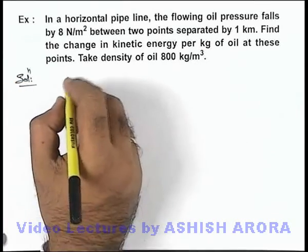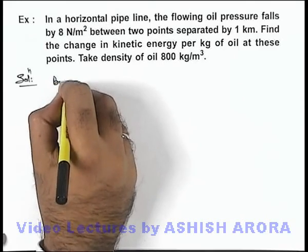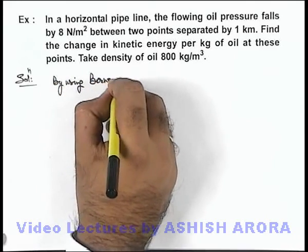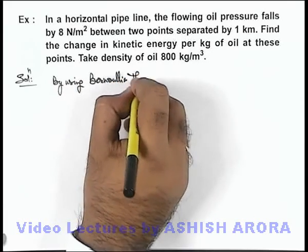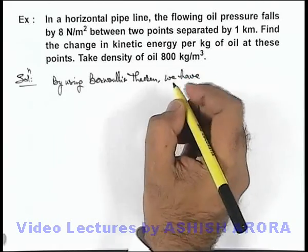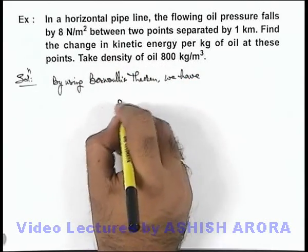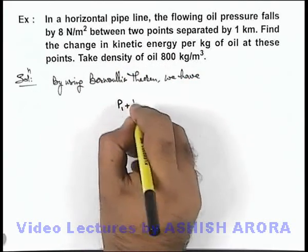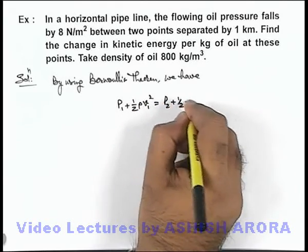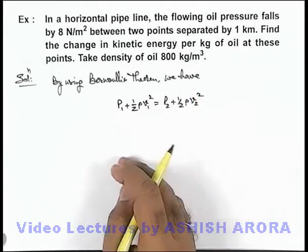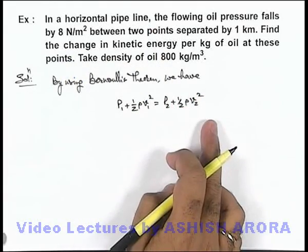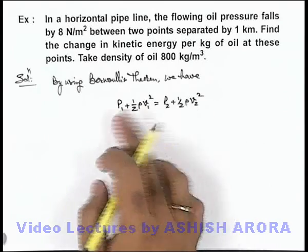Here we can directly start by using Bernoulli's theorem. As the pipeline is horizontal, we can write: p1 plus half rho v1 squared is equal to p2 plus half rho v2 squared. Since the height level is the same on both sides, we can ignore the gravitational potential energy terms on both sides of the equality.